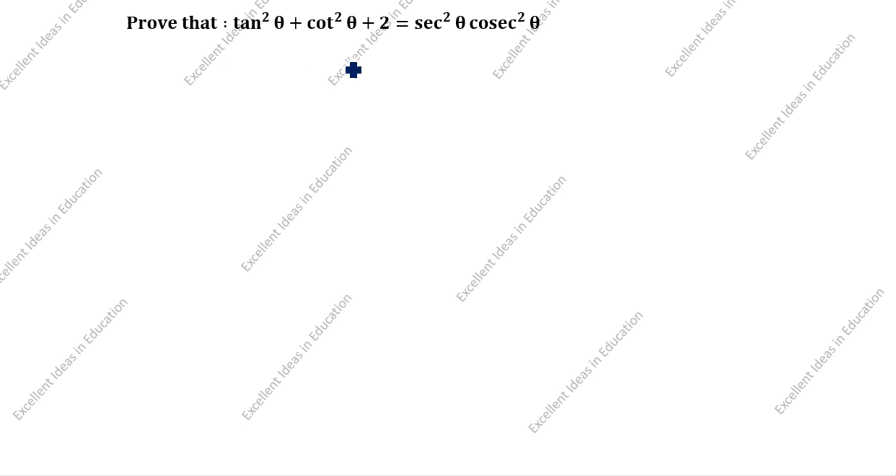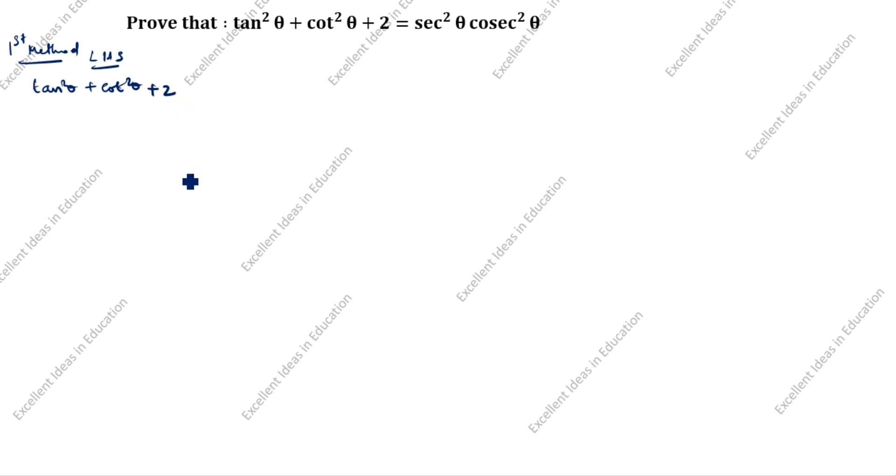We will prove LHS equal to RHS. This is the first method. LHS is given as tan squared theta plus cot squared theta plus 2.